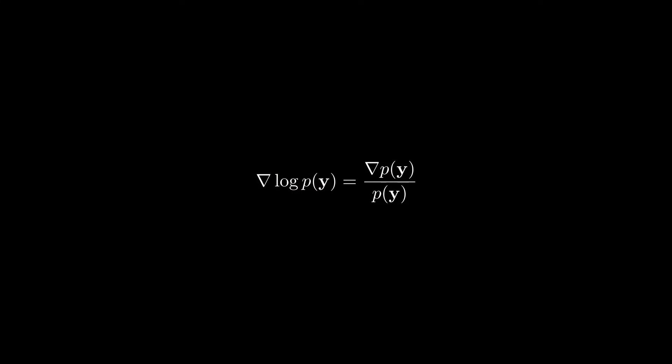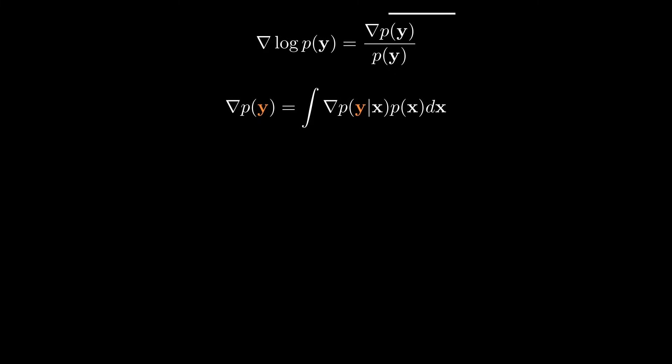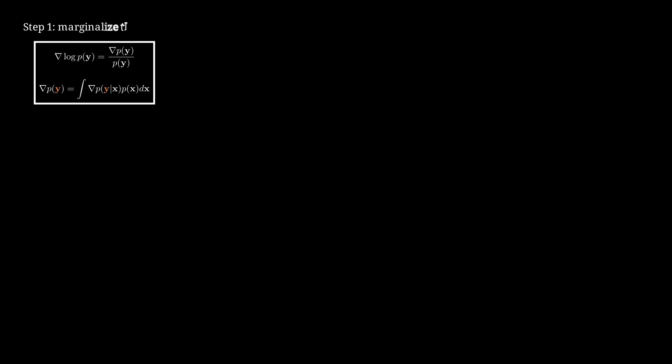First, we will expand the expression of the score of the noisy distribution. The gradient of the log of a function is the ratio between the gradient of that function and the function itself. Next, we marginalise the noisy distribution p of y by expressing it in terms of the likelihood p of y given x. If you don't recall why we can do that, let's just say it's like expressing p of y as the sum of all its slices. Then we take the gradient with respect to y on both sides. With some assumptions on the regularity of the distributions, we are allowed to move the gradient operator inside the integral. So, this shows that the gradient of p of y directly depends on the gradient of the likelihood. That concludes the first step of the derivations, which were basically just marginalising the density.